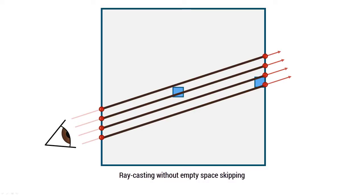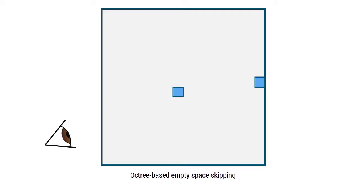In ray casting without empty space skipping, the entire volume space has to be sampled, independent of whether samples contribute to the output image or not.